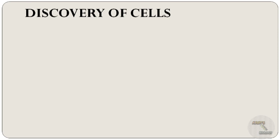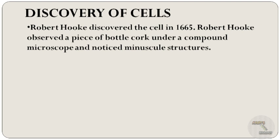Now let's discuss about the discovery of cells. Robert Hooke discovered the cell in the year 1665. He observed a piece of bottle cork under a compound microscope and noticed minuscule structures that reminded him of small rooms. He named these small rooms as cellulae, which was later named as cells. As his microscope had limited magnification, he could not see any details in the structure, and the cells discovered by him were non-living cells.